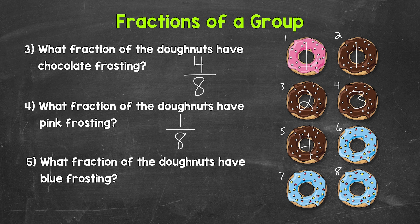And then lastly, number 5, we have what fraction of the donuts have blue frosting. So again, we know that we have 8 total donuts. So that's our denominator. Now we need the numerator.